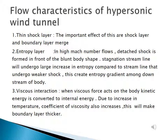There are three key hypersonic flow effects. First, thin shock layer: the shock layer and boundary layer merge. Second, entropy layer: in high Mach number flows, a detached shock is formed in front of a blunt body shape; the stagnation streamline undergoes a large increase in entropy compared to streamlines that undergo weaker shocks, creating an entropy gradient downstream of the body. Third, viscous interaction: when viscous forces act on the body, kinetic energy is converted to internal energy; due to the increase in temperature, the coefficient of viscosity also increases, making the boundary layer thicker.